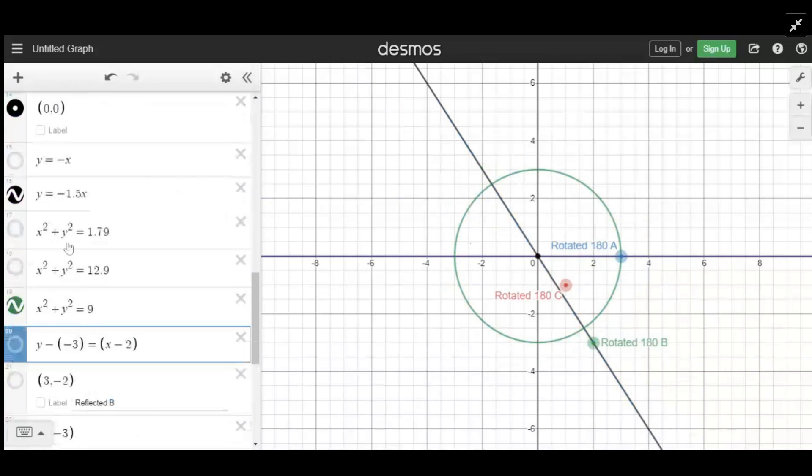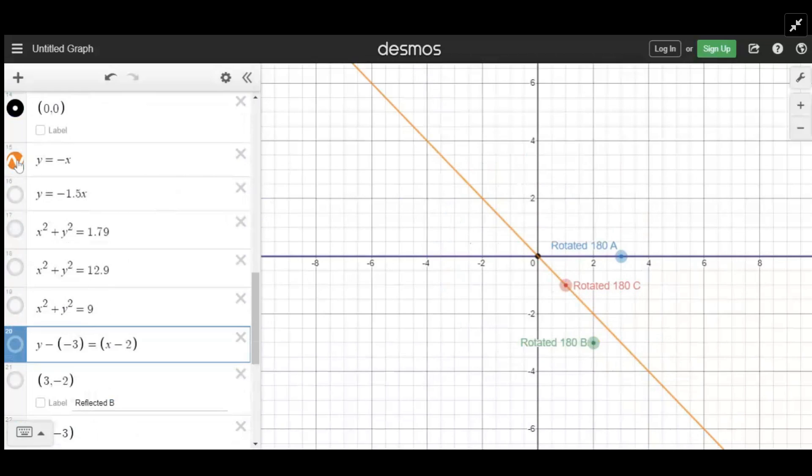We've done the first part. Let's get rid of these lines and circles. Those are all my rotated values. Now I need to reflect them around the line y equals negative x.